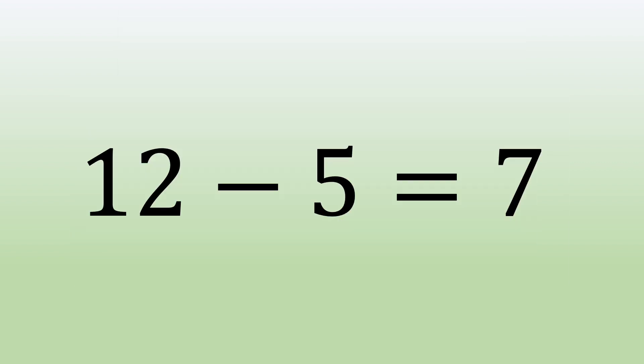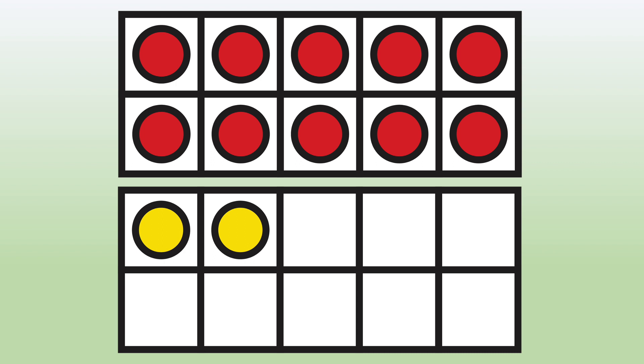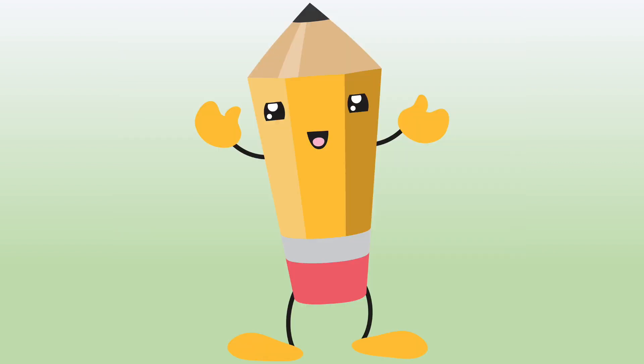12 minus 5 equals 7. By thinking of 12 ones instead of a 10 and a 2, we were able to solve. We regroup to find the difference.